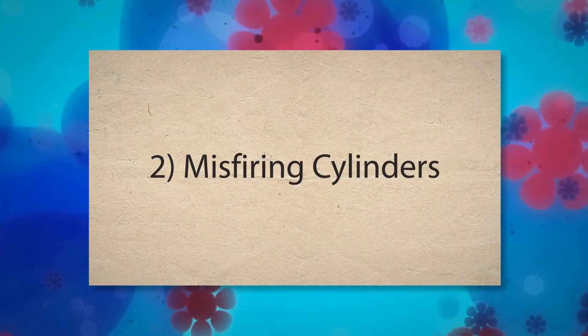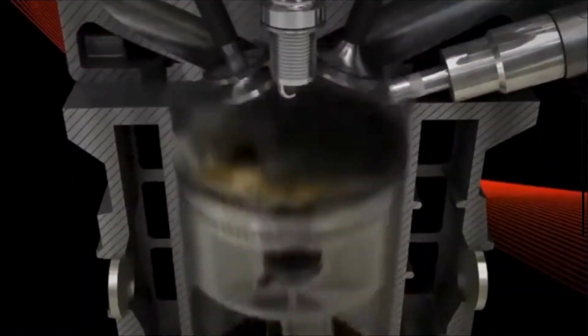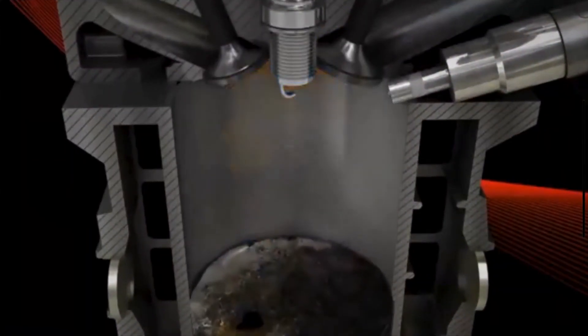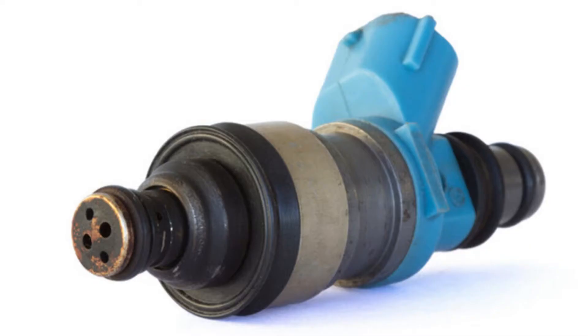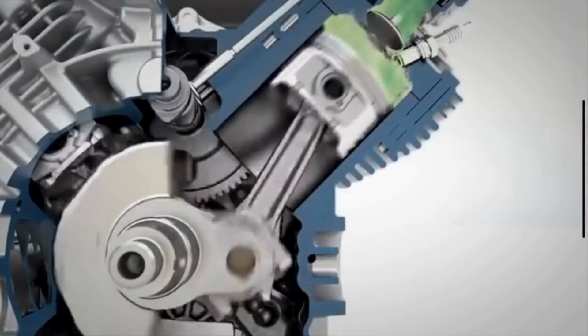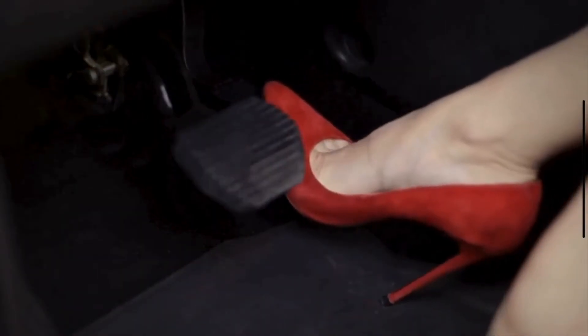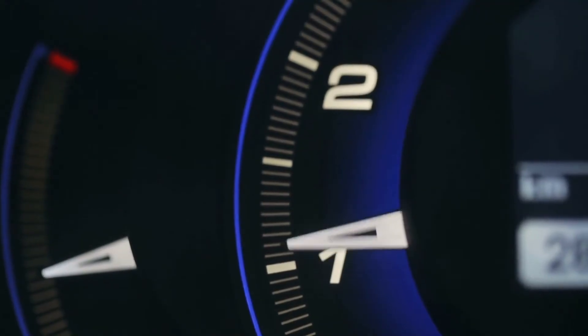Second, misfiring cylinders. An engine misfire occurs when one or more cylinders fail to ignite the fuel-air mixture at the proper time. This can be due to faulty spark plugs, ignition coils, or fuel injectors. Misfires cause the engine to run unevenly, which can be seen as fluctuating RPM.